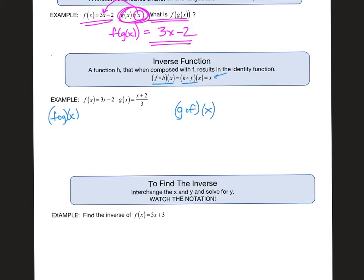Starting over here, I'm gonna have 3 times X plus 2 over 3 minus 2. The threes cancel, I get X plus 2 minus 2, which then equals X.